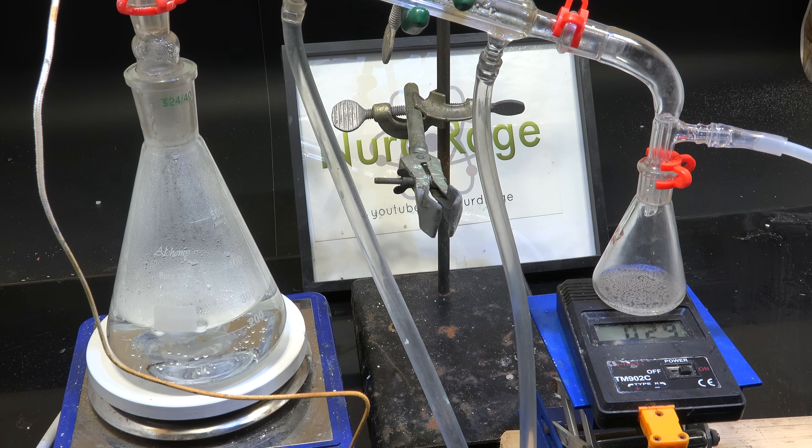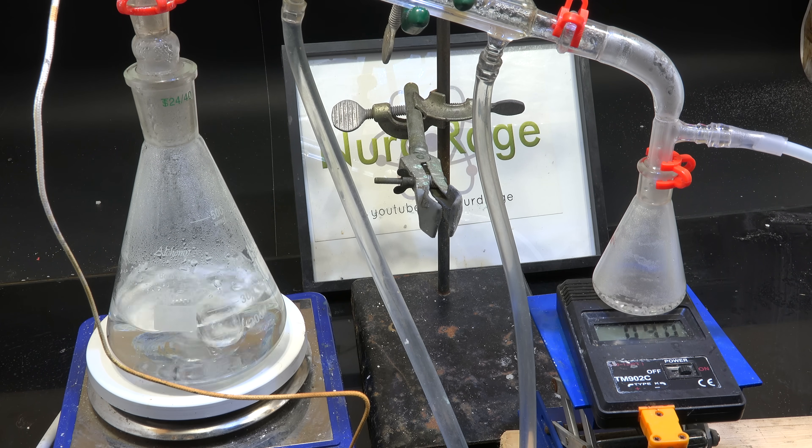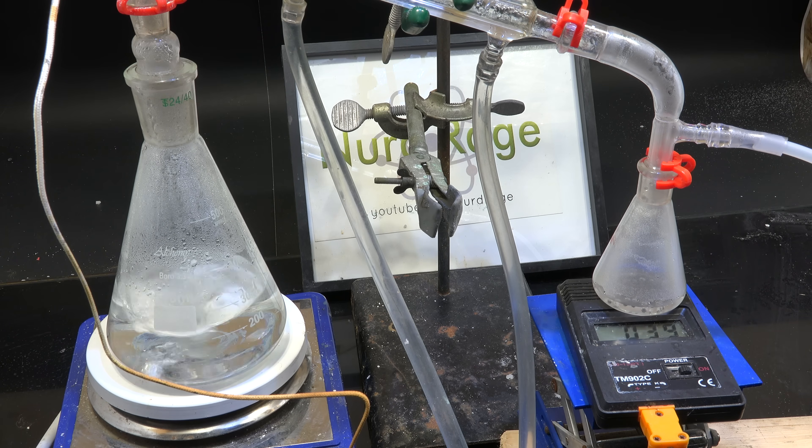If this works we should be distilling water at below the normal boiling point of water. Reducing pressure has the effect of lowering the boiling point for all liquids. And look, there it is. We're already distilling water under reduced pressure at just 39 degrees celsius. That's far below the normal boiling point of water at 100 degrees celsius.